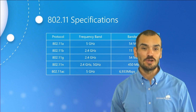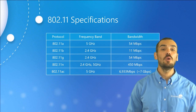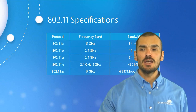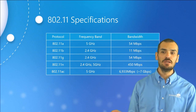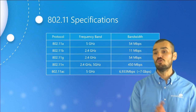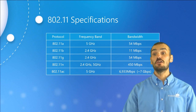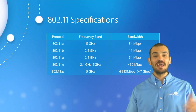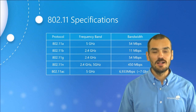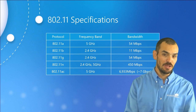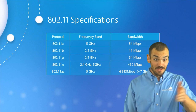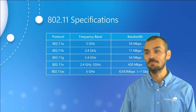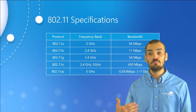802.11a utilized orthogonal frequency division multiplexing, otherwise known as OFDM, to send data bits in parallel over multiple frequencies. Think of OFDM like making a million dollars by making a bunch of $100 sales instead of one giant million-dollar sale — a lot of little sales add up. In wireless terminology, instead of sending one big piece of information at a time, it sent a lot of little pieces which eventually added up. It wasn't very popular at the time because most computer hardware was designed for the 2.4 gigahertz band.